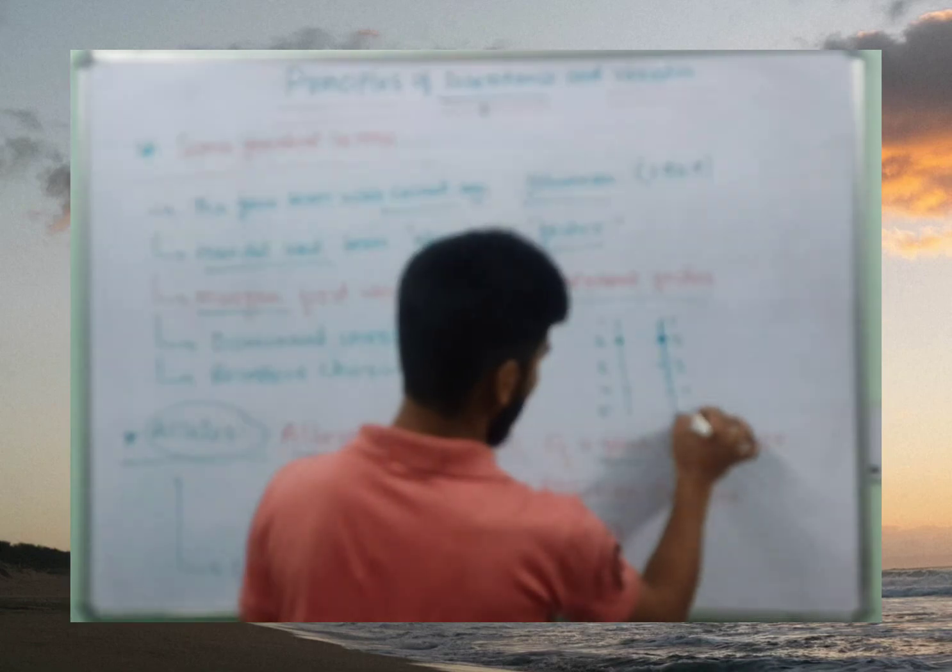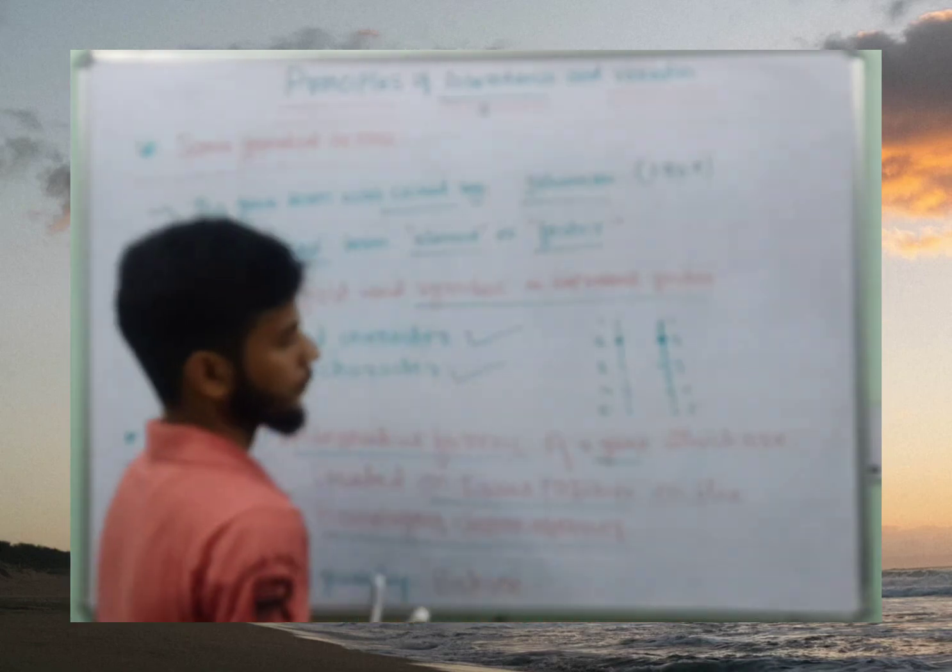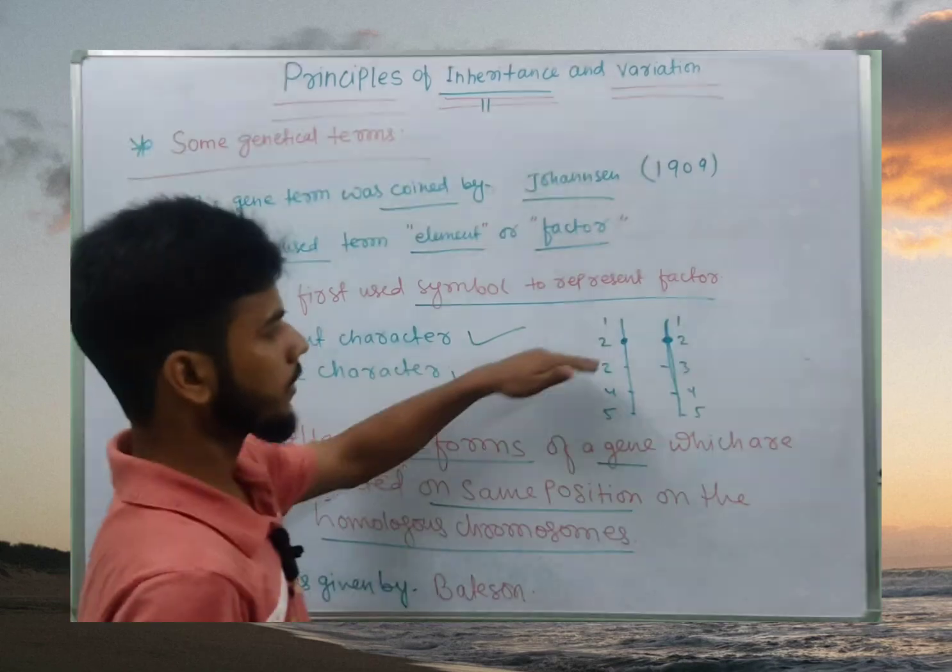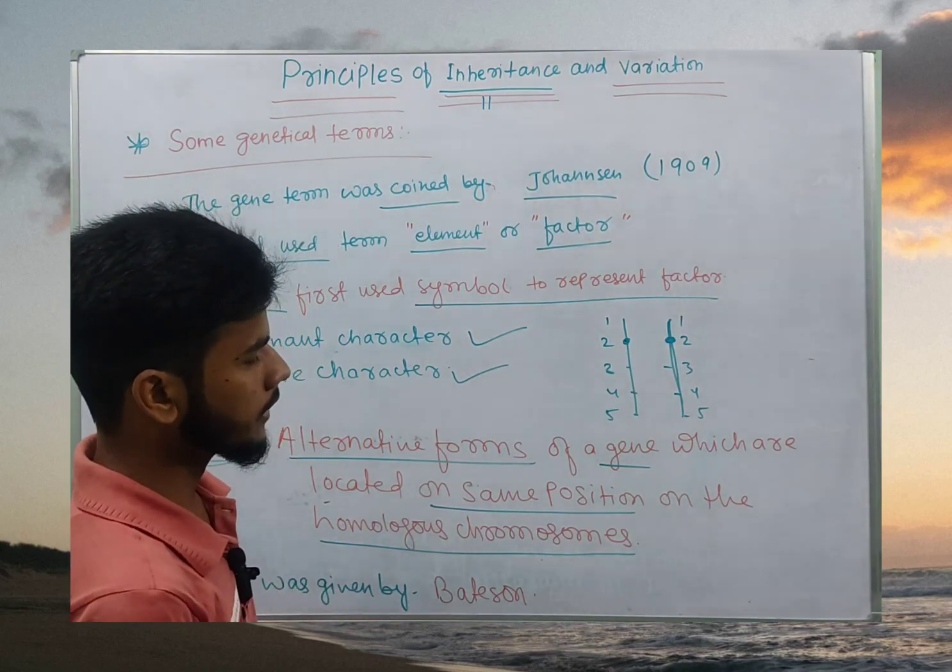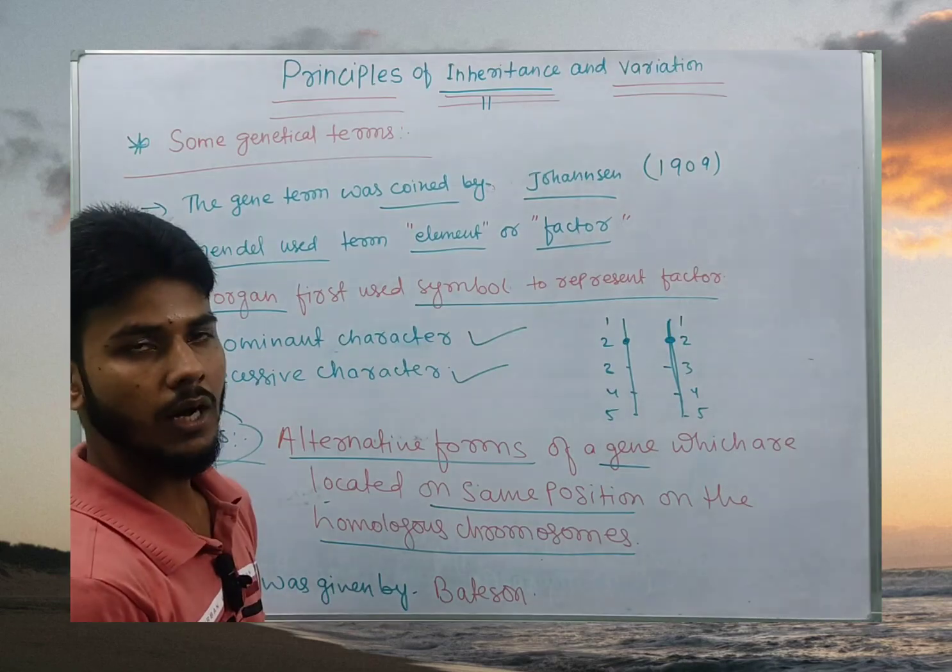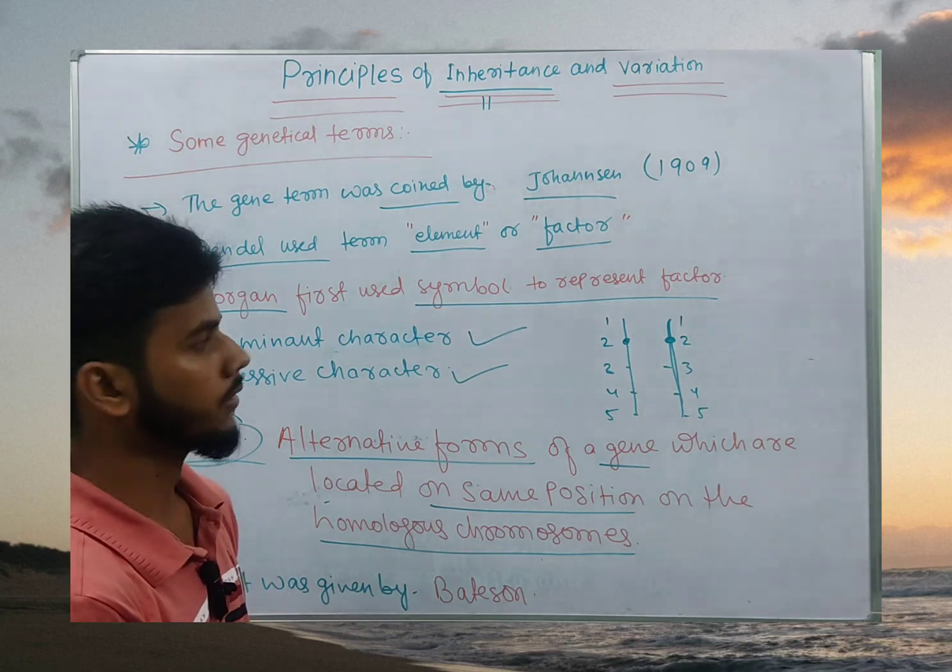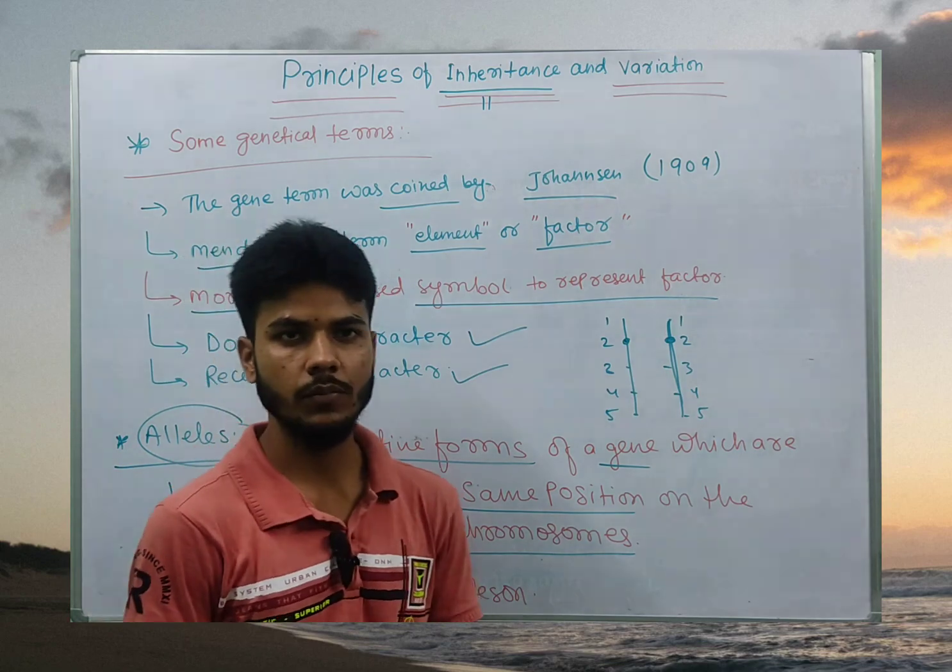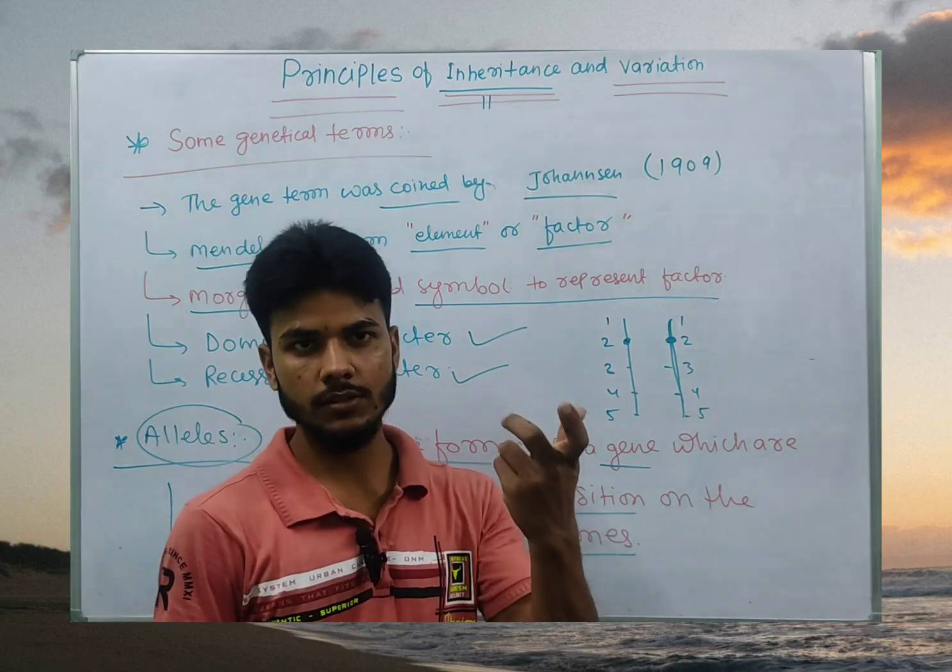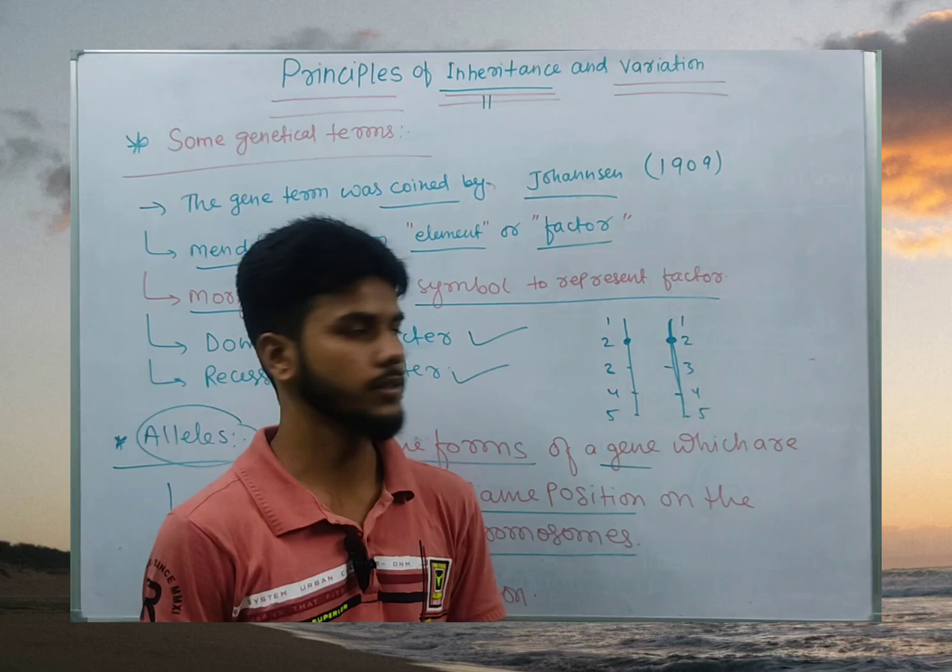One, two, three, four and five. If the, for example, here it is a gene which are responsible for the height of organism. Like in plants, height, it is a character. Height has two forms. One is responsible for tallness. Another is responsible for darkness or the shortness.